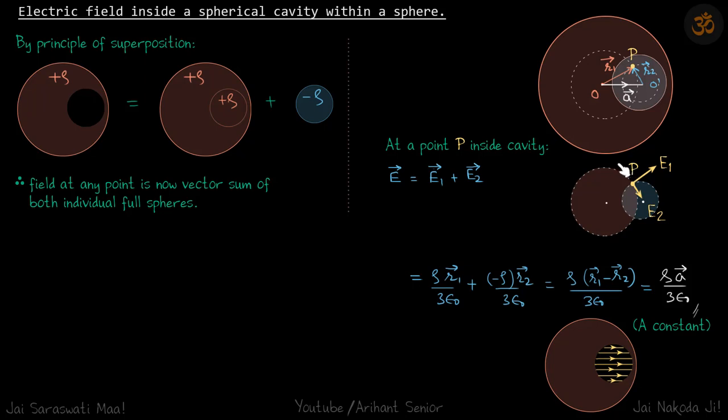Field due to the outside region of this sphere will be zero, and field due to outside region of this smaller sphere will also be zero. So field will be there only due to this sphere on the periphery of which we have the point P.